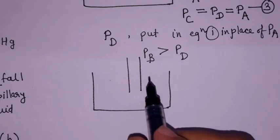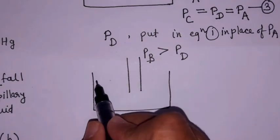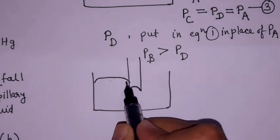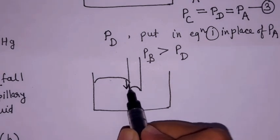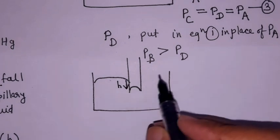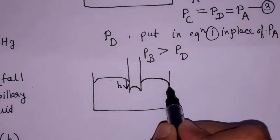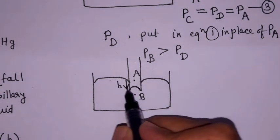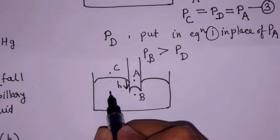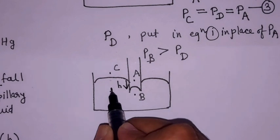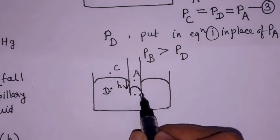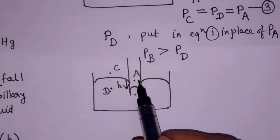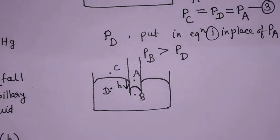Due to this pressure difference, the level inside the capillary falls. Molecule B moves downward by height H from the original mercury level. This is the reason for capillary fall in the case of mercury and glass.